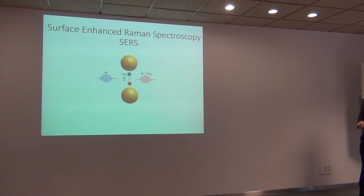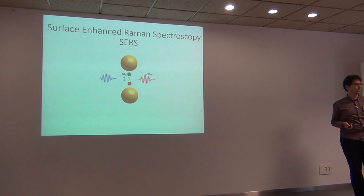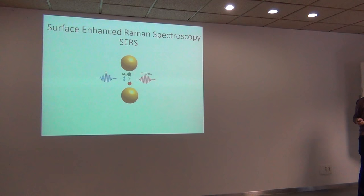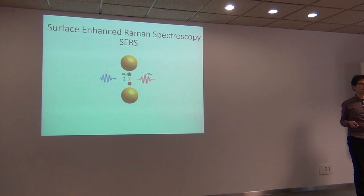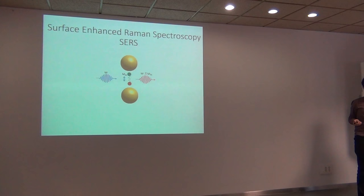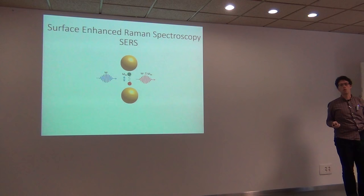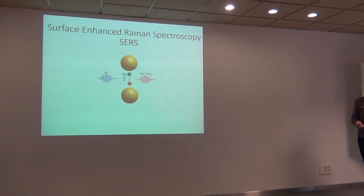Now we go to the real topic of the talk: SERS, surface-enhanced Raman spectroscopy. In SERS we have a plasmon, we put the molecule close to it, and we can have huge enhancement of the Raman signal. One of the main problems with Raman is that it is very, very weak, so you need many molecules. Thanks to this enhancement, you can use much smaller amounts. When I say huge enhancement, normally numbers of 8 to 12 orders of magnitude are what people mention, although the exact maximum is still debated.